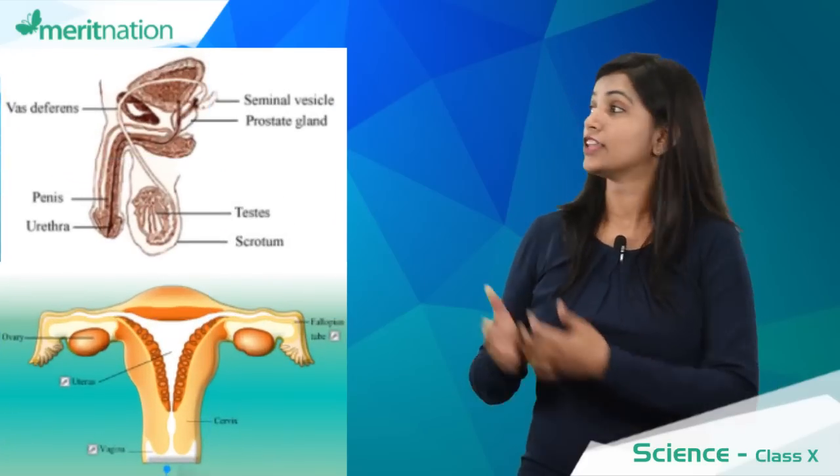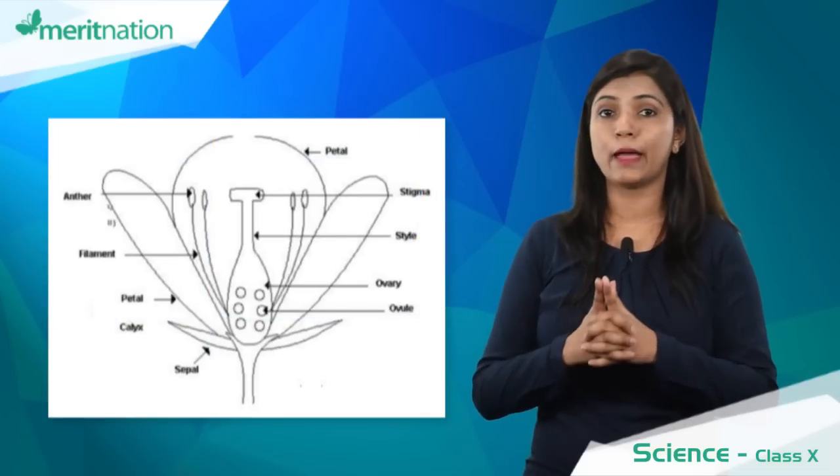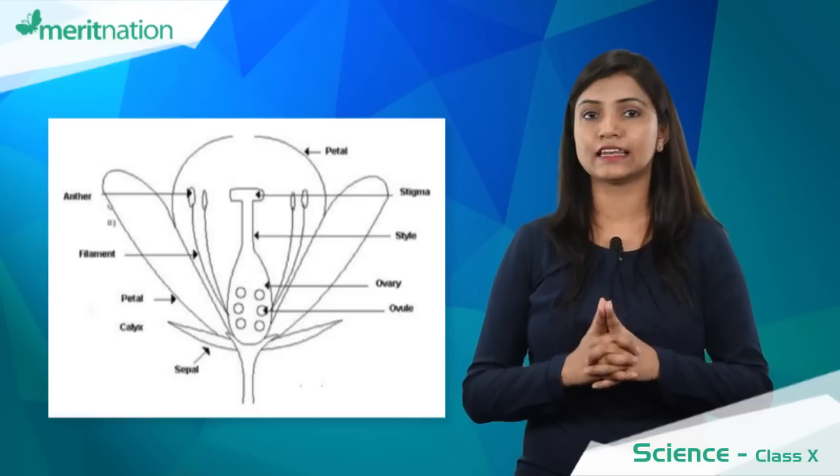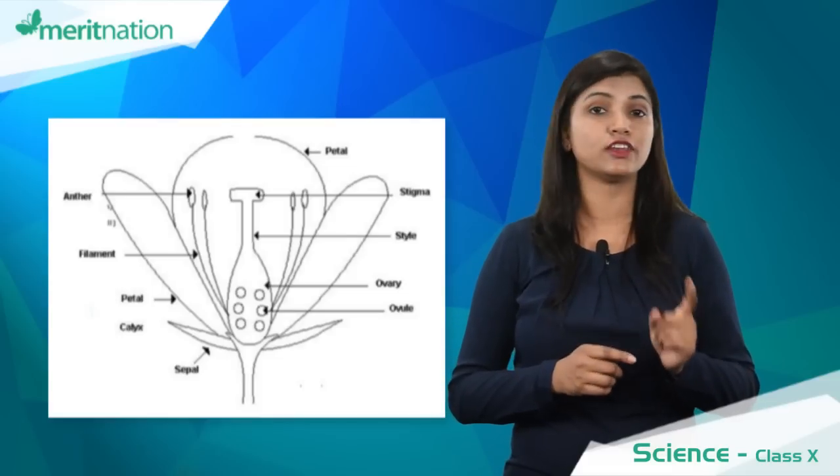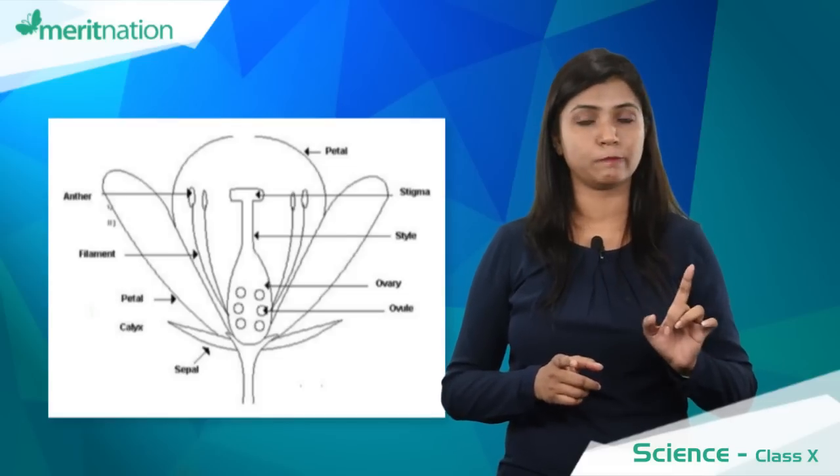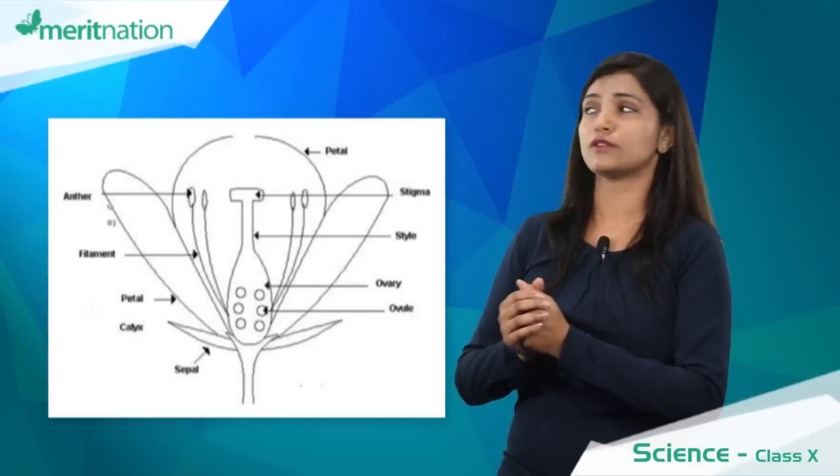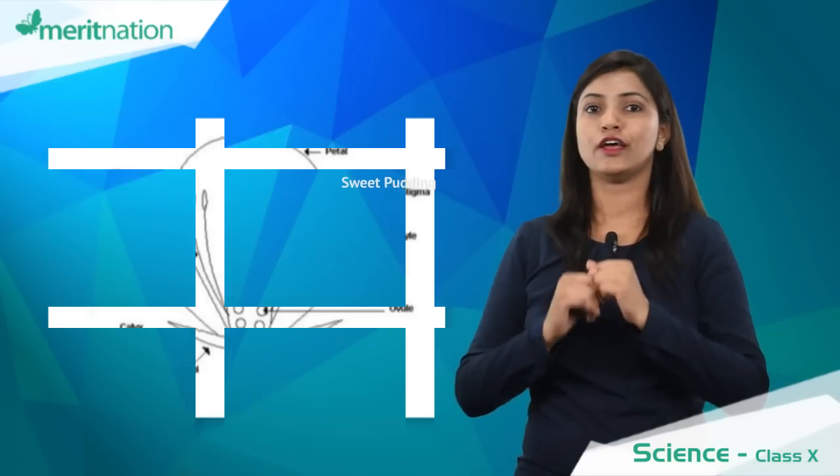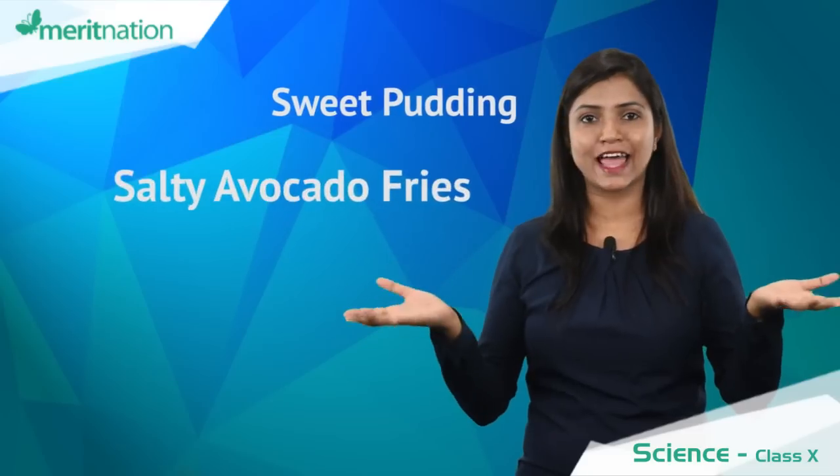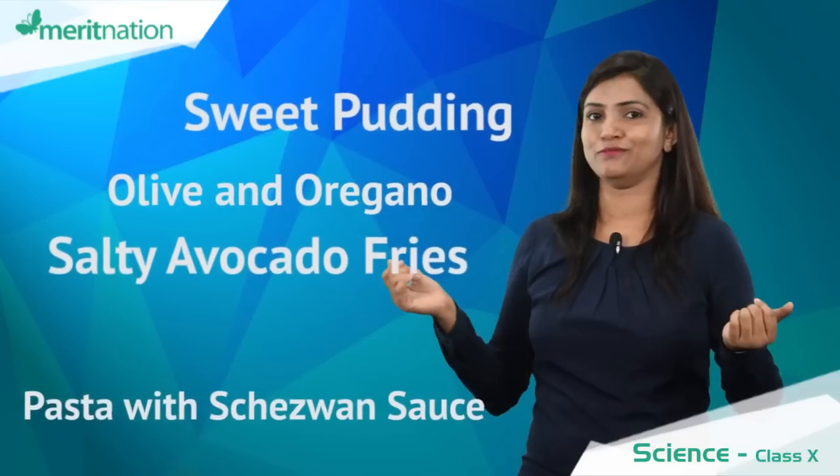The important diagrams that we have in this chapter are the human male and female reproductive organs and the structure of flower. Remember, you need to draw well-labeled, neat and clean diagrams. If in case you tend to forget the labeling, because labelings are very important, you cannot afford to miss it - half mark is for one labeling. So if you forget the labeling, for the structure of flower, what I used to do is I'm a foodie person, so I remember the names by actually remembering: sweet pudding, salty avocado fries, pasta with sauce, olive and oregano. Simple!